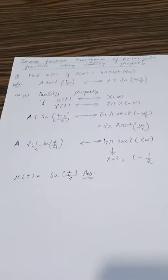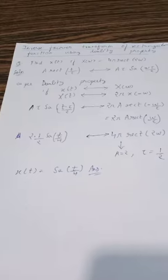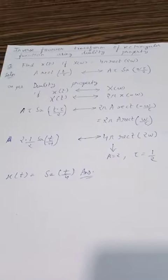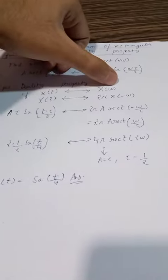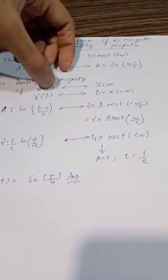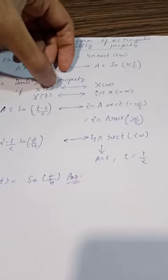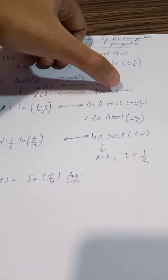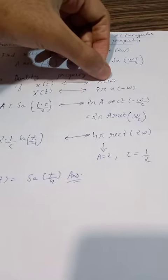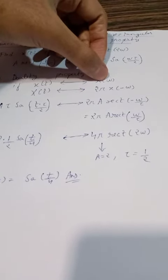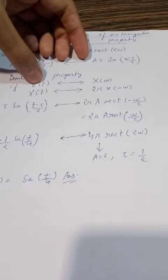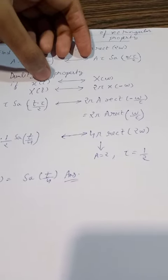We also know that as per the duality property, if the Fourier transform of x(t) is X(ω), then if you replace ω with t, you have to replace t with minus ω and multiply by 2π.